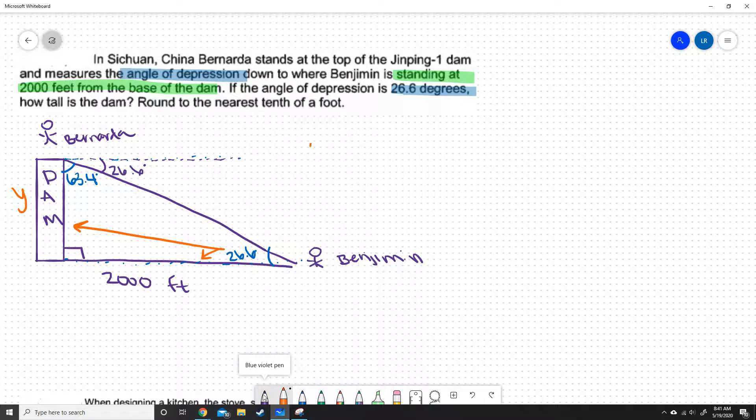If we're looking at opposite and adjacent, then we should use our tangent. So tangent of 26.6 degrees is y over 2,000, opposite over adjacent. We want to get y by itself, so we'll multiply by 2,000. So y equals 2,000 times tangent of 26.6 degrees.